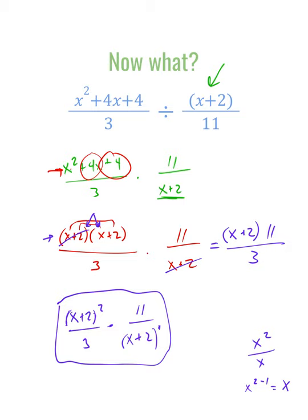What I couldn't do is take that x plus 2 in the denominator and get rid of all the x plus 2s in the numerator. It's a one-for-one match — one of the x plus 2s gets crossed out with the x plus 2 in the denominator. In the end, we have x plus 2 in the numerator, times 11, divided by 3. You can put the 11 out front — that's a more common notation — and that would be our answer.